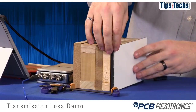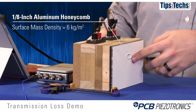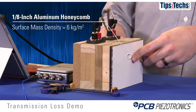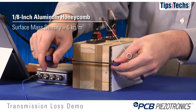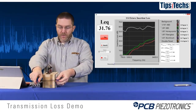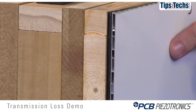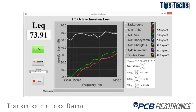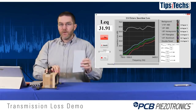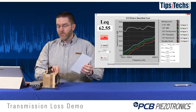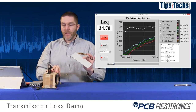Next we'll try an aluminum honeycomb material. This is also 1/8-inch thick and has almost the same surface mass density as the last ABS plastic. But it's a double-panel design with little air gaps in the honeycomb lattice. The mass law would tell us we should get the same insertion loss for the honeycomb as for the 1/8-inch ABS, but at low frequencies we get slightly better insertion loss with the double-panel material due to double-panel transmission loss.